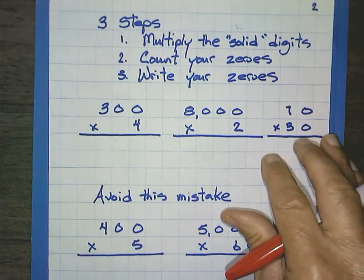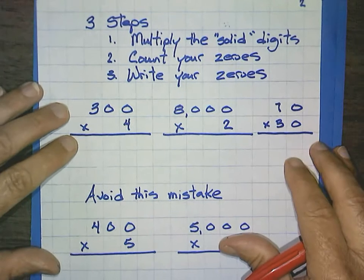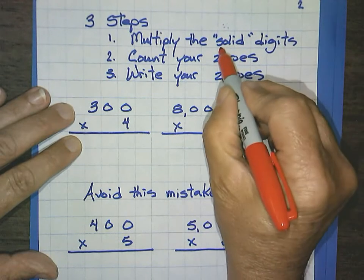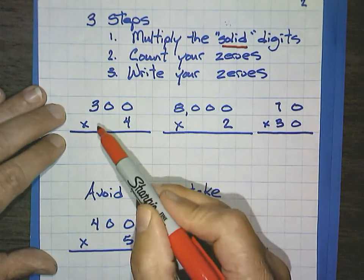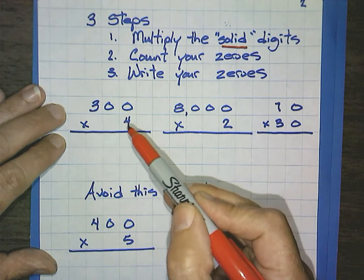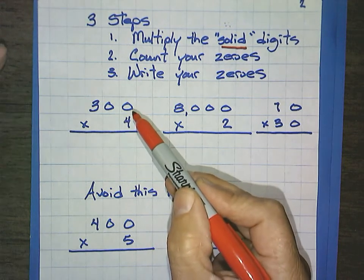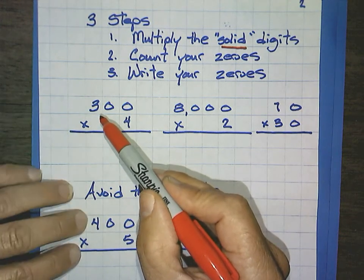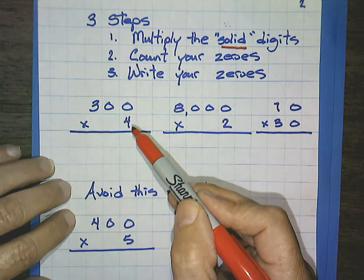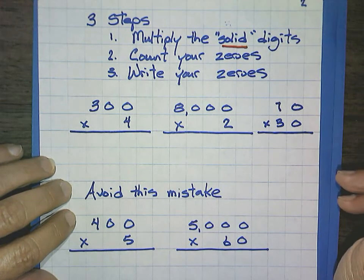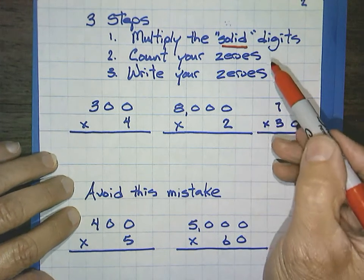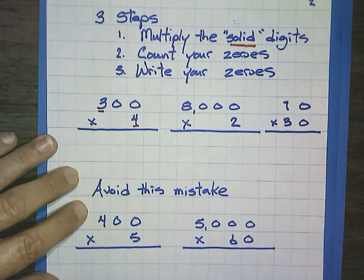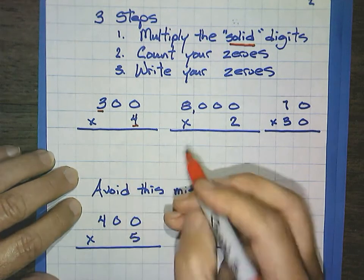Different ways that you can do this, I just like to use three steps for solving problems like this. The three steps are multiply what I refer to as the solid digits. For example, in the problem 300 times 4, well, zeros are not solid. In real life, zero is nothing. But if you have three donuts, that's something you can pick up. If you have four pencils, that's something that's solid you can pick up. So that's my term. That's not really a math term. It's just my own term. So multiply your solid digits. So for example, 300 times 4,